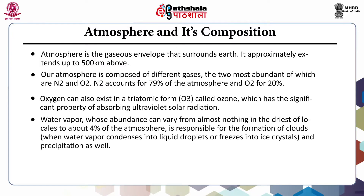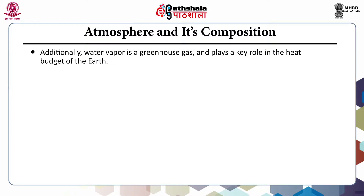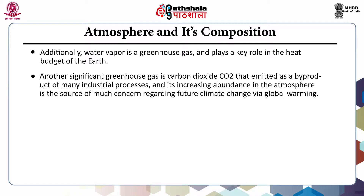Oxygen can also exist in triatomic form called ozone, which has the significant property of absorbing ultraviolet solar radiation. Water vapor, whose abundance can vary from almost nothing in the driest locales to about 4% of the atmosphere, is responsible for cloud formation and precipitation. Water vapor is a greenhouse gas and plays a key role in the heat budget of the earth. Another significant greenhouse gas is carbon dioxide, emitted as a byproduct of many industrial processes, and its increasing abundance is a source of concern regarding future climate change through global warming.